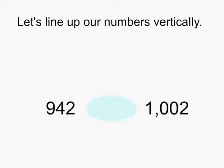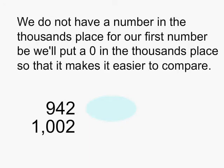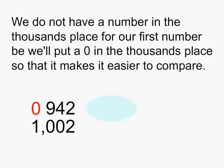We'll start by lining up our numbers vertically. As you can see, we do not have a number in the thousands place for our first number, but we'll put a 0 in the thousands place, so it makes it a little bit easier to compare.